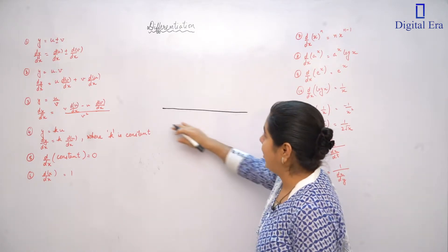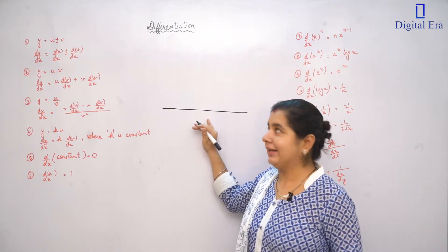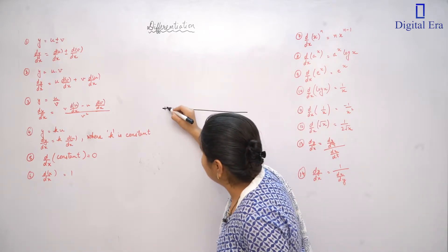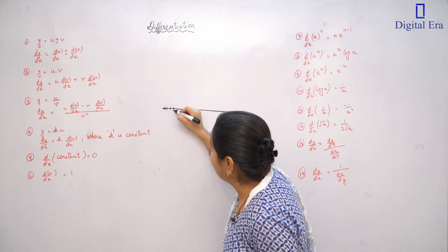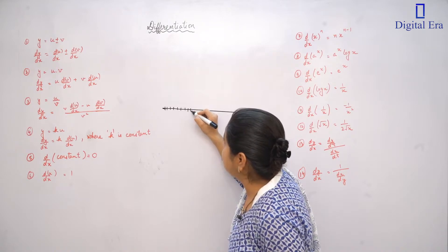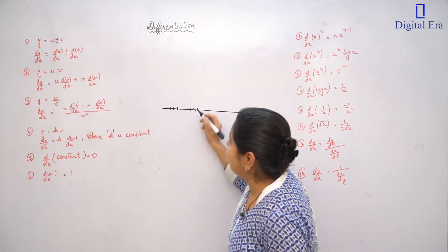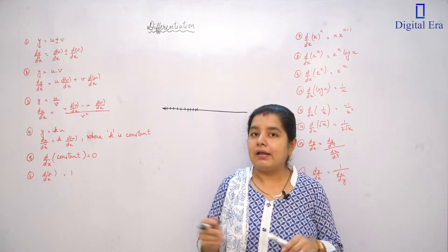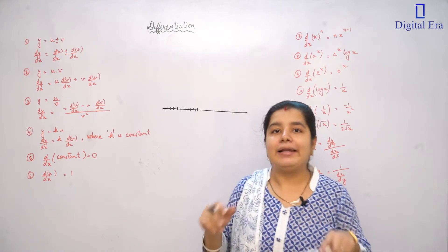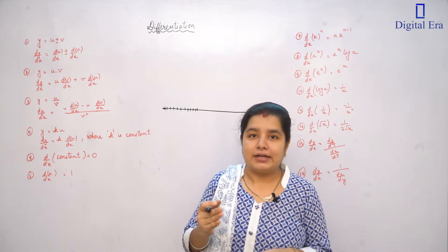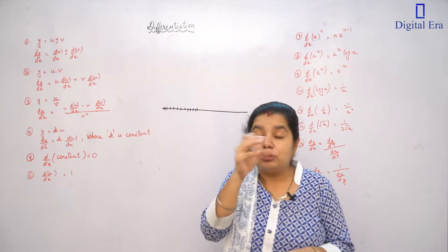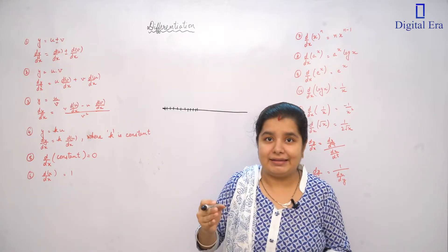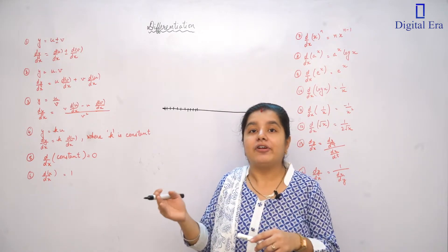For example, we have a line. If we divide this line into small parts — similarly, if we take a map of India, we will divide it into small parts. This concept of dividing something into small parts is the basis of differentiation.